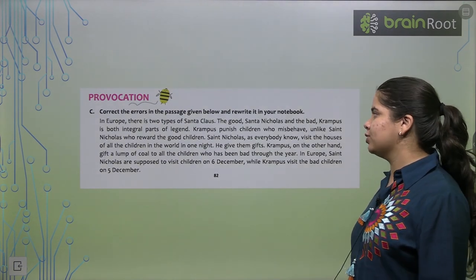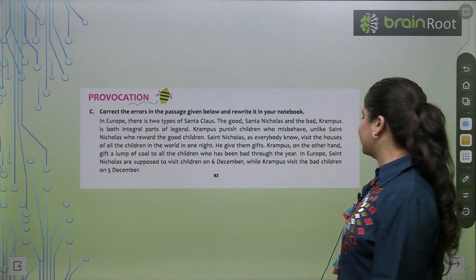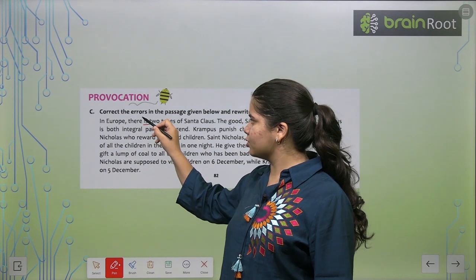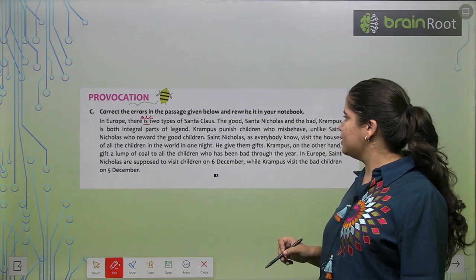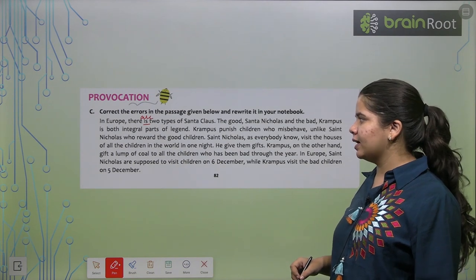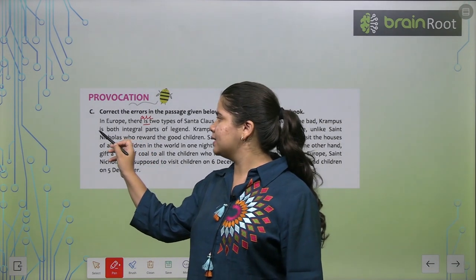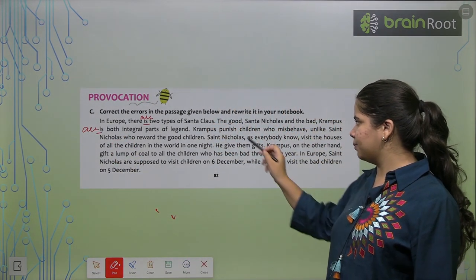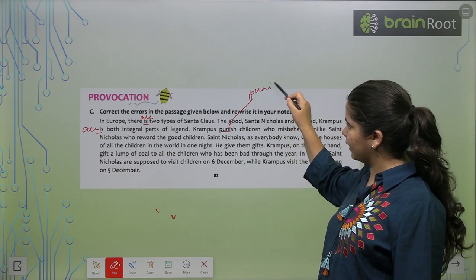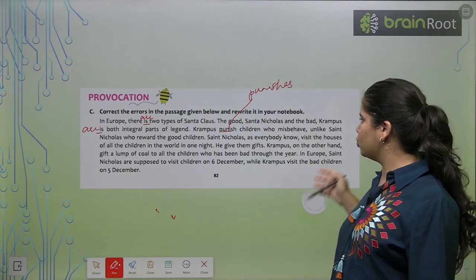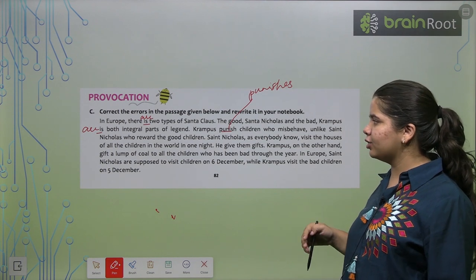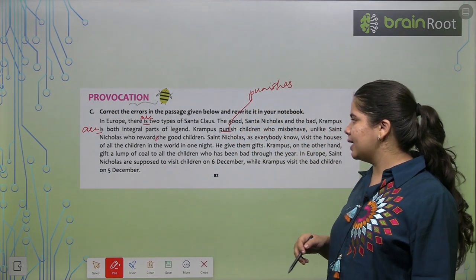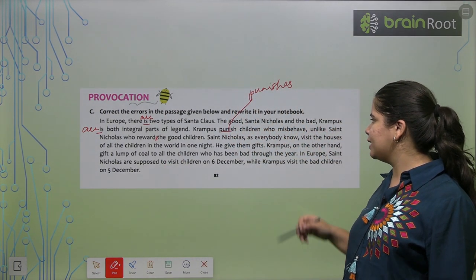In Europe, there is two types of Santa Claus. No. Isko hatake kya aayega are. Toh, I am just going to write like this. Isko hatake aayega are. The good, Santa Nicholas and the bad, Krampus are. Both integral parts. Yahan pe are aayega. Krampus punishes children. Punish children nahi aayega yahan pe. Punishes aayega. Yes. Punishes children who misbehave and like Saint Nicholas who rewards good children.